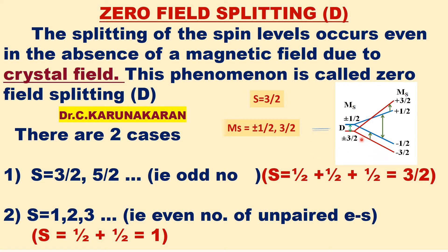Further in the presence of magnetic field, these are further split into four levels, all completely split: -3/2, -1/2, +1/2, +3/2. In NMR, +3/2 is the ground state, whereas in EPR, ms = -3/2 is the ground state. So the splitting of spin levels or spin degeneracy occurs even in the absence of magnetic field due to crystal field or ligand field.